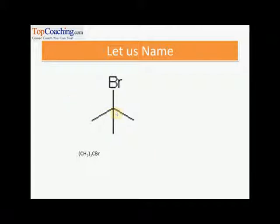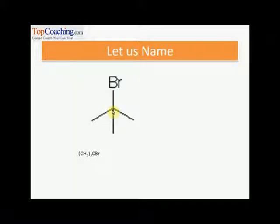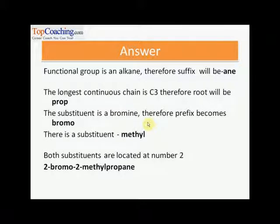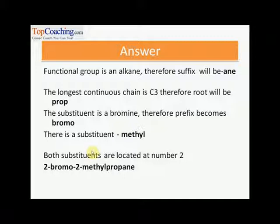The next compound has three methyl groups and a bromine: CH₃C(Br)=CH₂. The functional group is an alkene, so the suffix is '-ene'. The longest continuous chain has three carbon atoms, so the root is 'prop-'. The substituents are bromo and methyl. Both bromine and methyl are on carbon number two, so the IUPAC name is 2-bromo-2-methylpropene.